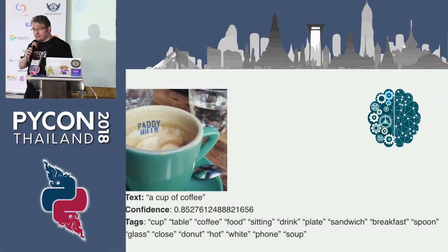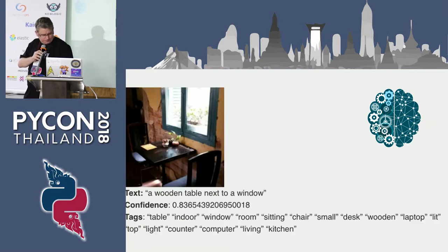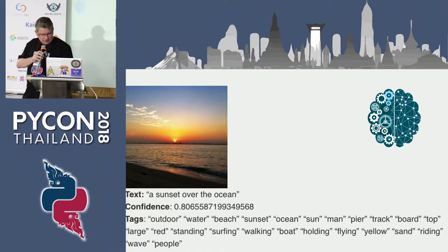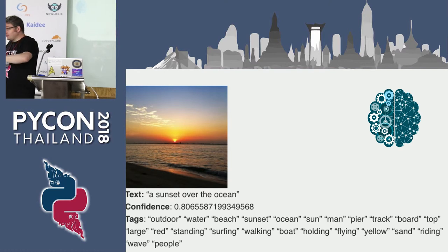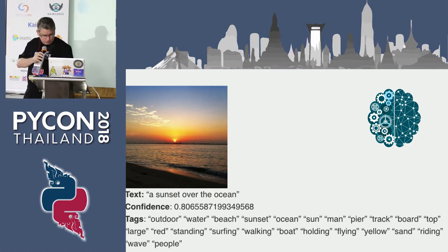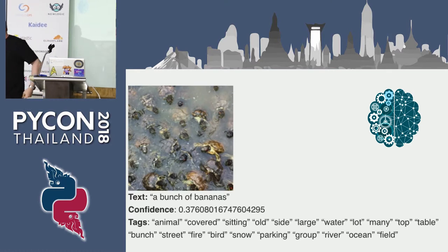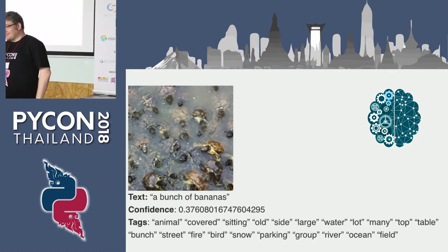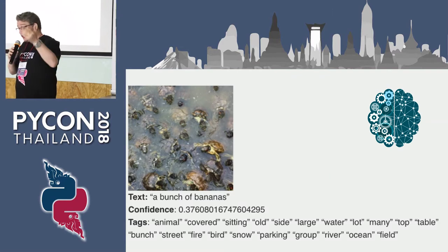A cup of coffee — similar. In this case, 85% confident. This is in Vietnam, a wooden table next to a window. Impressive. A sunset over an ocean — 80%. So you can see where all these tags come from; I've done this a thousand times. But to be sure — this one: bunch of bananas? No. In turn, it's only 37% confident.